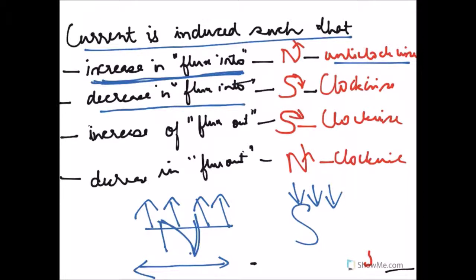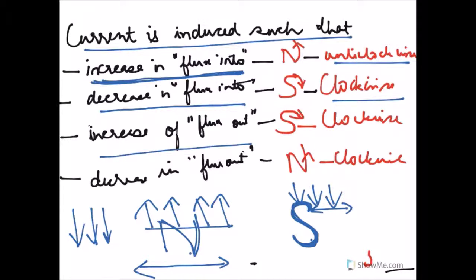If there is a decrease in flux into the page, the coil develops a south polarity to increase flux into the page — current is clockwise. If there is an increase in flux out of the page, again a south polarity develops to produce flux into the page to counter it. If there is a decrease in flux out of the page, a north polarity develops to counter it — current is anti-clockwise.